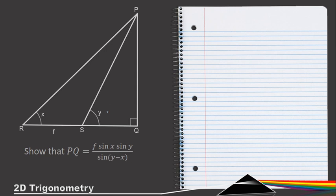The first thing we want to do is identify the two triangles. We have PRS as one triangle and PSQ as the other. PRS is not a right-angled triangle, whereas PSQ is a right-angled triangle. When we see a right-angled triangle we think of sine, cosine, tangent ratios, and when we see a non-right-angled triangle we think of the sine rule or cosine rule.